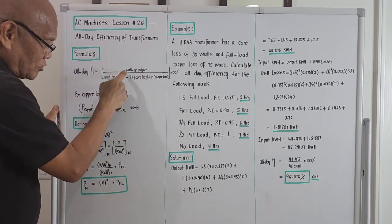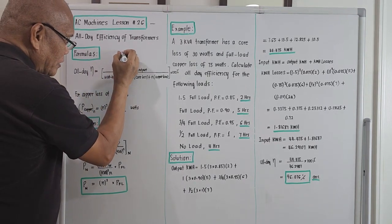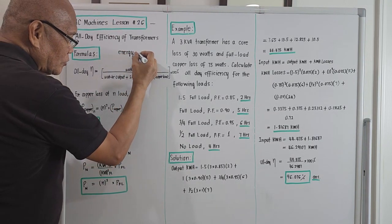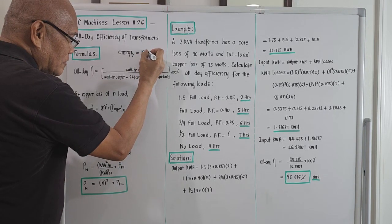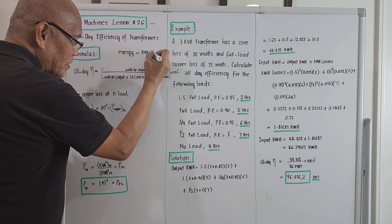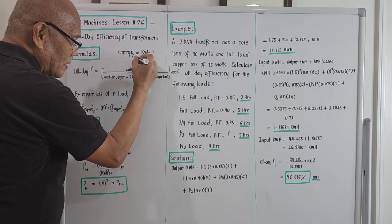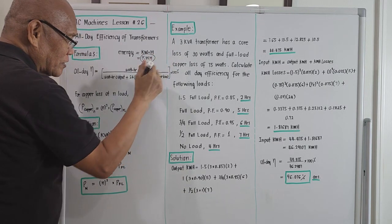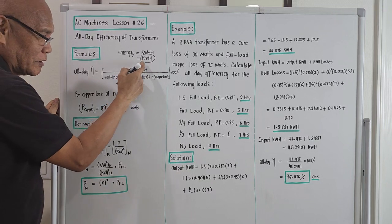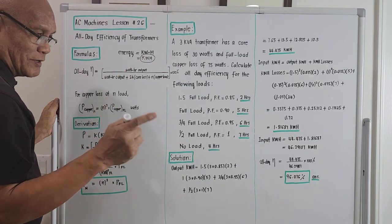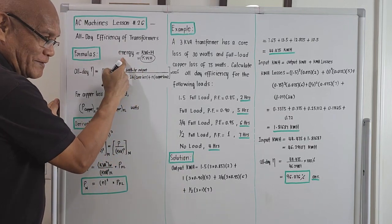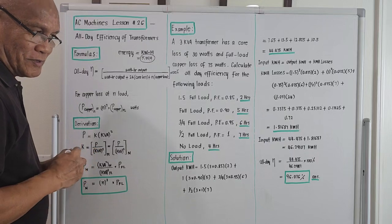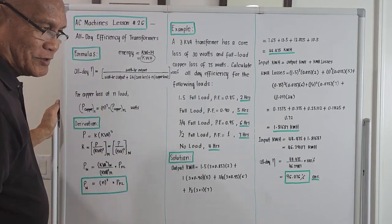For all-day efficiency we are talking about energy. Energy is the product of kilowatts times hours, which gives us kilowatt-hours. The kilowatt-hour is what we pay to utility companies. If you see the designation kilowatt-hour, that is energy.